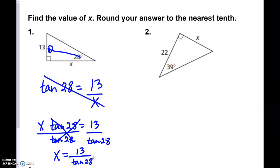Every time the variable is on the bottom, these two basically just switch places. So we take 13 and divide by the tangent of 28. Rounding to the nearest tenth, we get 24.5.